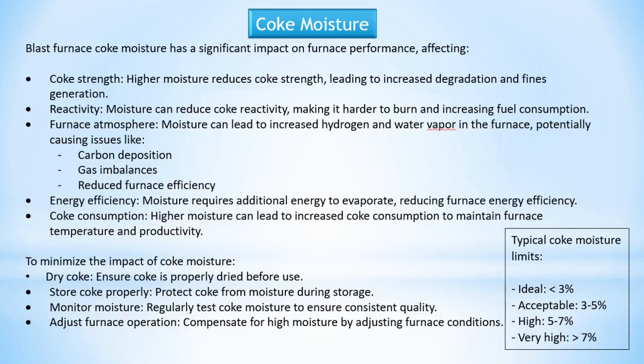Coke consumption — higher moisture can lead to increased coke consumption to maintain furnace temperature and productivity. Typical coke moisture limits: ideal less than 3%, acceptable 3–5%, high 5–7%, very high greater than 7%. To minimize the impact of coke moisture: dry coke — ensure coke is properly dried before use; store coke properly — protect coke from moisture during storage; monitor moisture — regularly test coke moisture; adjust furnace operation — compensate for high moisture by adjusting furnace conditions.